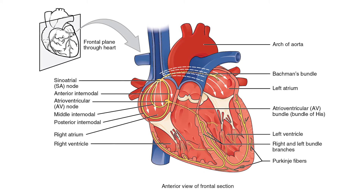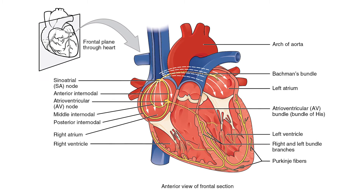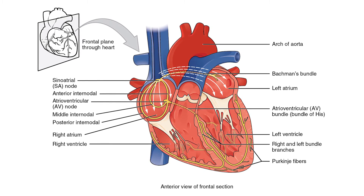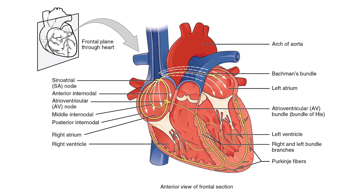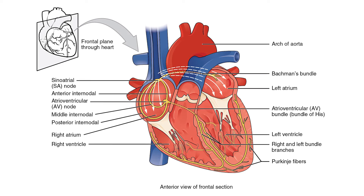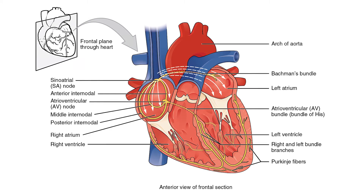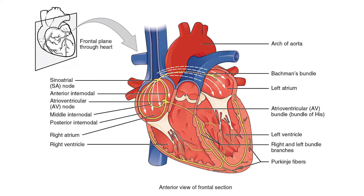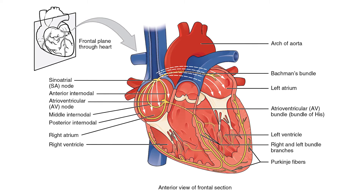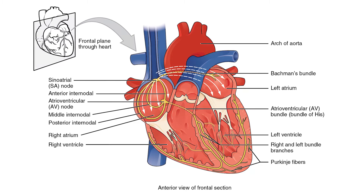Here are some important points to remember. The SA or sinoatrial node is the pacemaker of the heart. It initiates atrial contraction or depolarization, causes a stimulus 60 to 100 times per minute, and causes the contraction of the atria, which is represented by the P wave on the EKG.